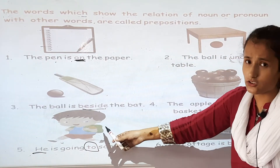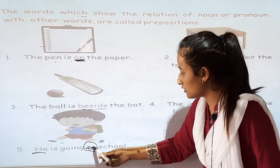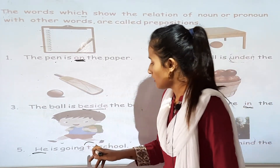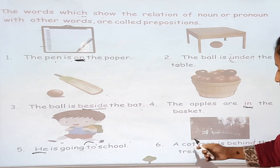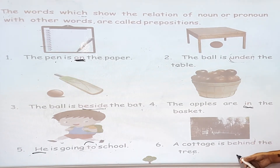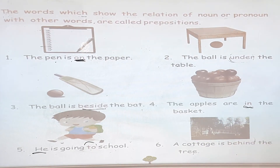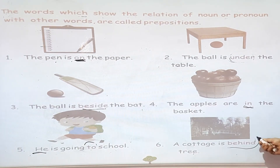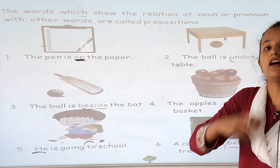For example, the boy is going to school — school is a noun. He is going to school, so 'to' is a preposition word; it shows the relations of a noun or a pronoun. A cottage is behind the tree — there are two things, cottage and tree, both nouns. 'Behind' is a preposition word that shows the relation between them.